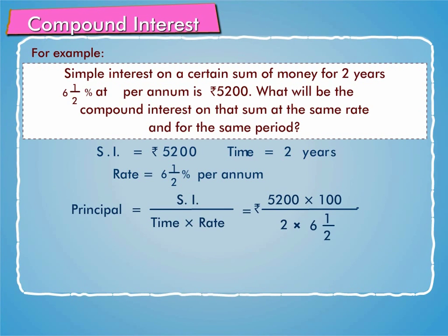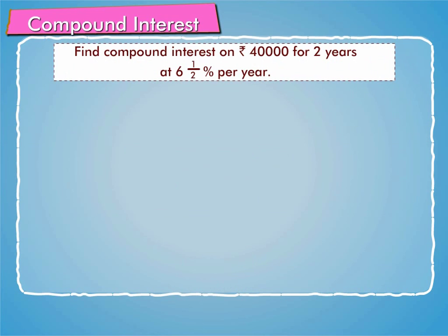This is equal to rupees 5200 into 100 by two into six and a half, which is equal to rupees 5200 into 100 into 2 by two into 13, which after simplification is equal to rupees 40,000.